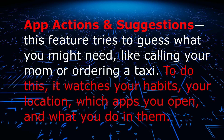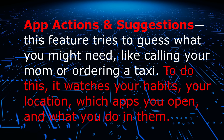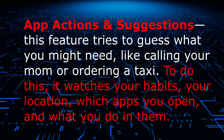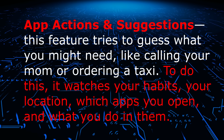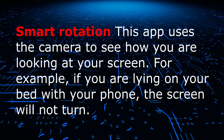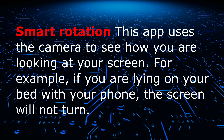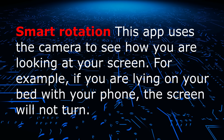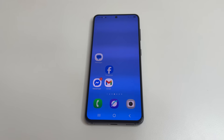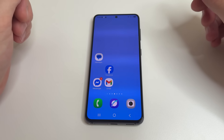App Actions and Suggestions: this feature tries to guess what you might need, like calling your mom or ordering a taxi. To do this, it watches your habits, your location, which apps you open and what you do in them. Smart Rotation uses the camera to see how you are looking at your screen — for example, if you are lying on your bed with your phone, the screen will not turn. As we can see, these are not basic features.